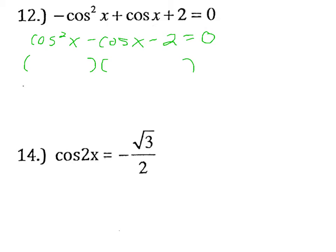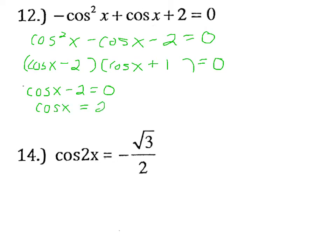We have cosine x times cosine x in order to get cosine x squared. And then we just need to find two numbers that multiply to negative 2 but add to negative 1, so that would be negative 2 and positive 1. So now we can take each piece and set it equal to 0. We have cosine x minus 2 equals 0, or cosine x equals 2.